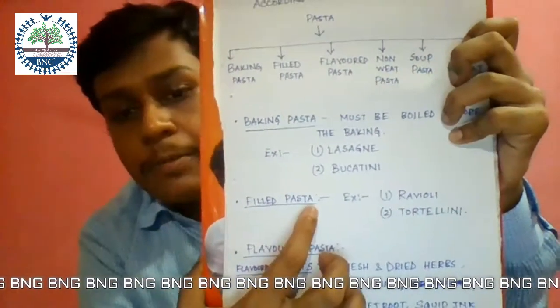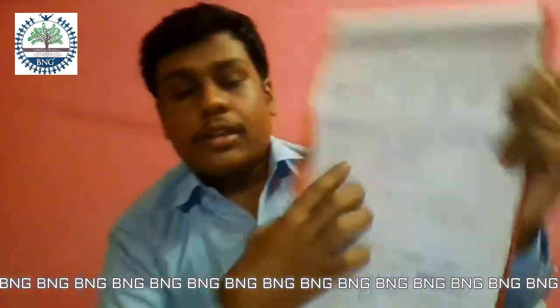Next, filled pasta. This type of pasta has its own filling. The filling may be made with meat, fish, vegetables, prawns, or sometimes all of them. There are some specific fillings for this type of pasta.